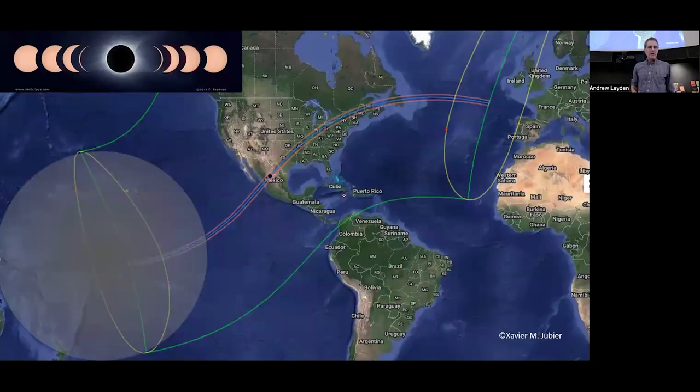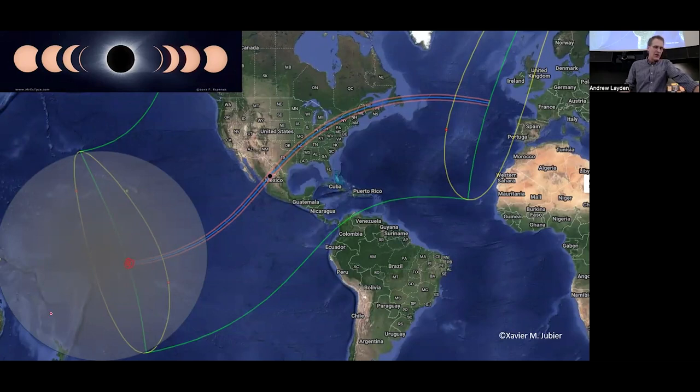In this total eclipse picture, you can see pinkish red plumes of light. That is the chromosphere, the mid-layer of the sun's atmosphere, peeking out. So we've got these three layers of the sun: photosphere, corona, and chromosphere.